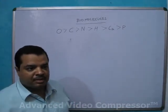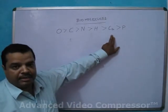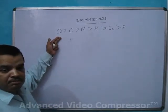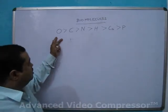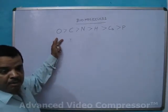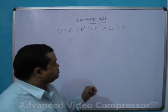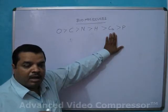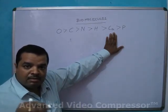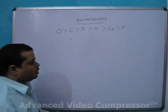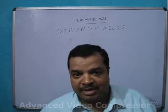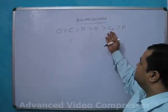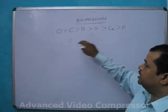In the earth crust, these elements are also present, but the percentage of Oxygen in the living beings is higher than in the earth crust. In the earth crust, the Calcium percentage is higher than the Calcium present in the living beings.